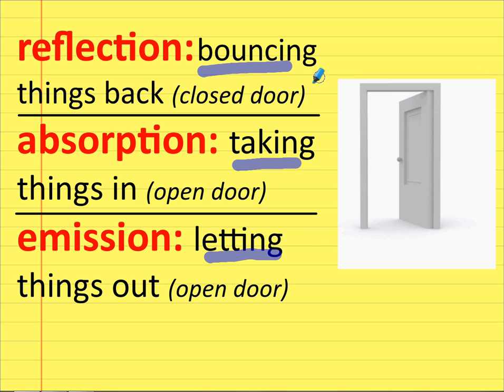You can look at these as doors. Reflection is when the door is closed and the heat bounces off. Absorption is when the door is open and heat can go through. And emission is when the door is still open but heat can come back out.